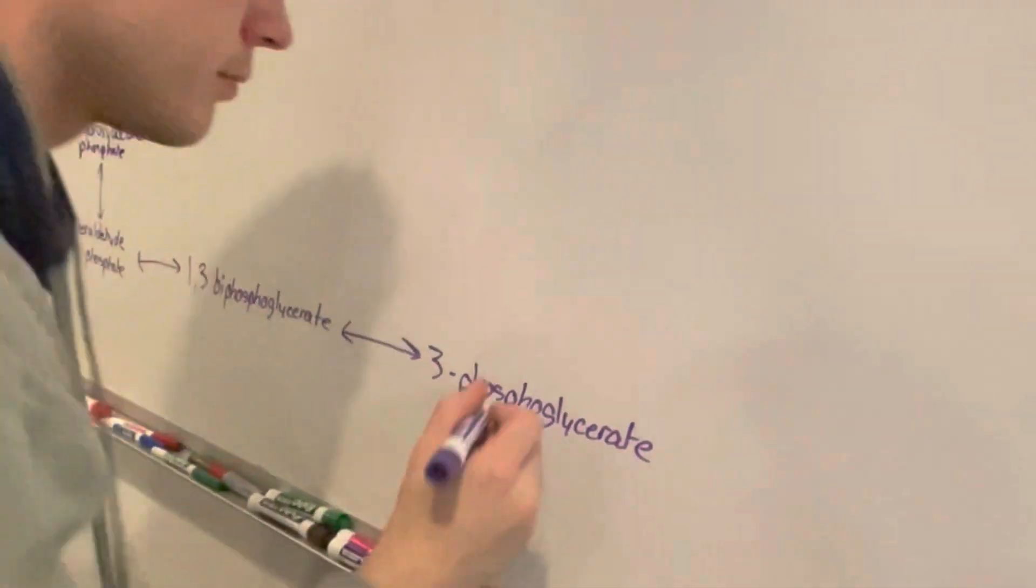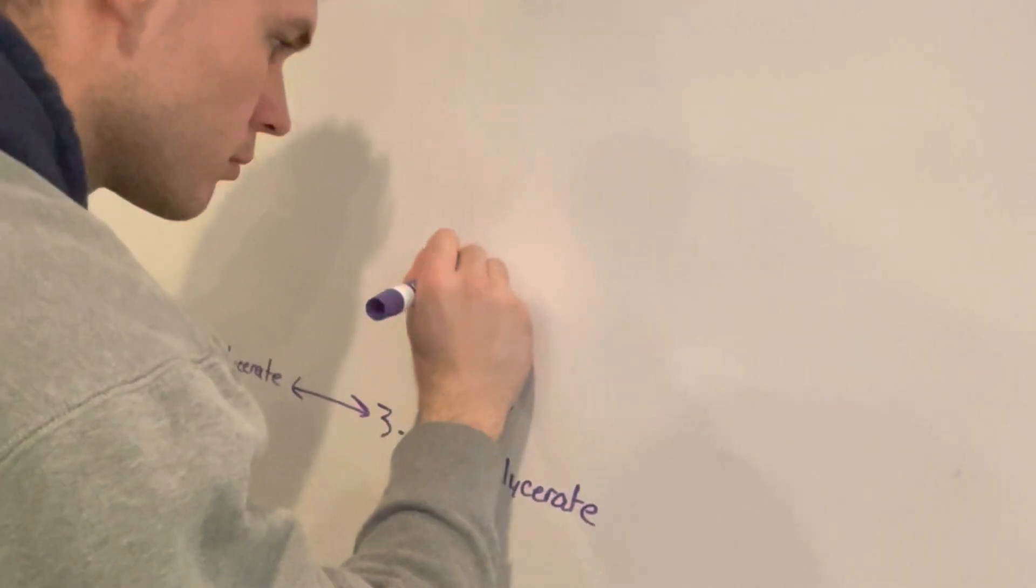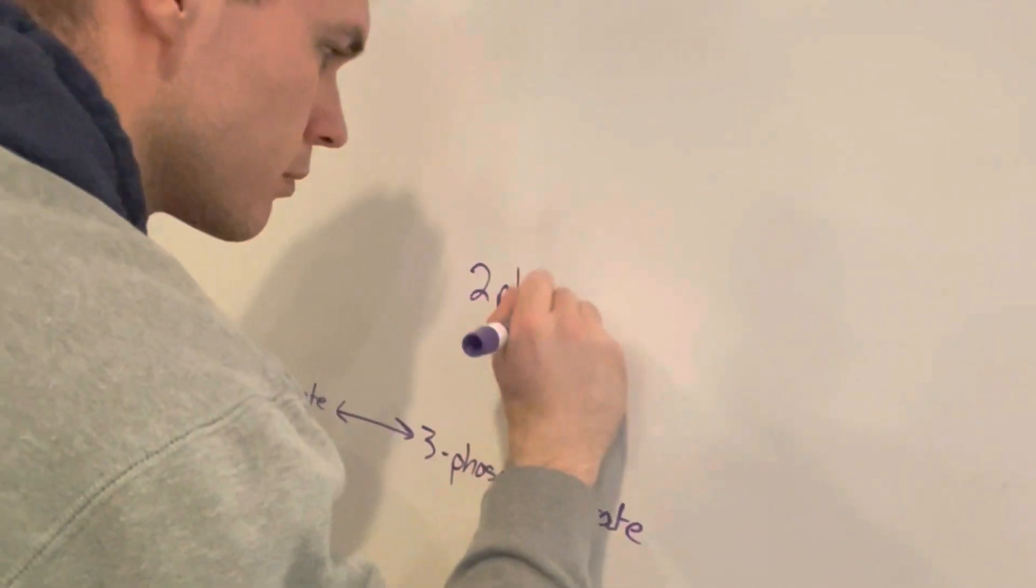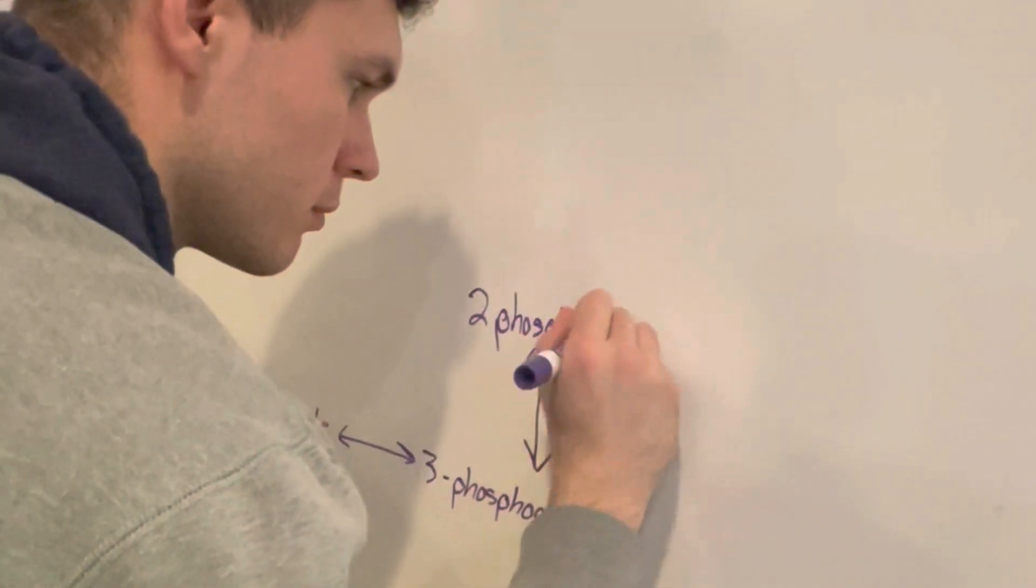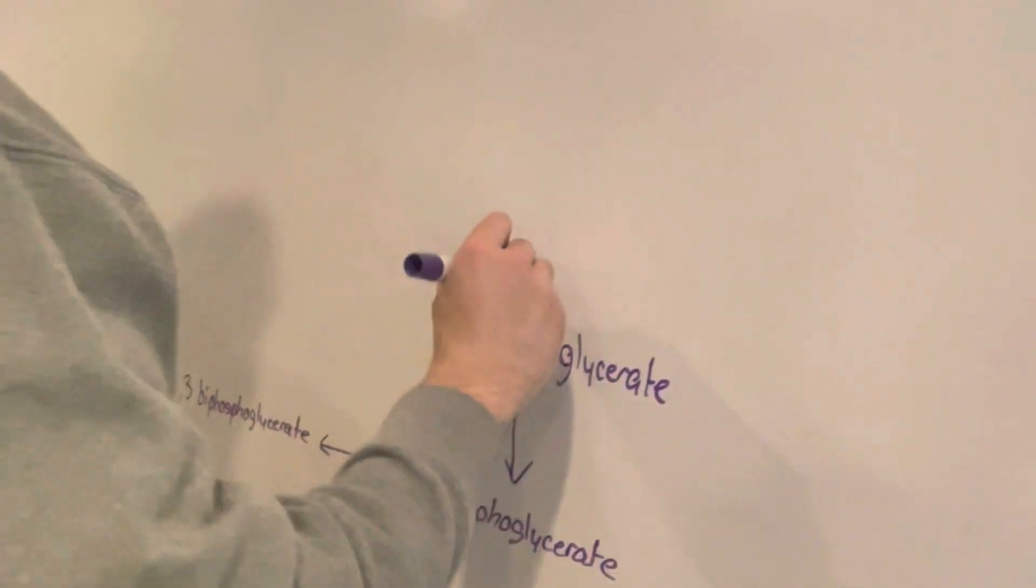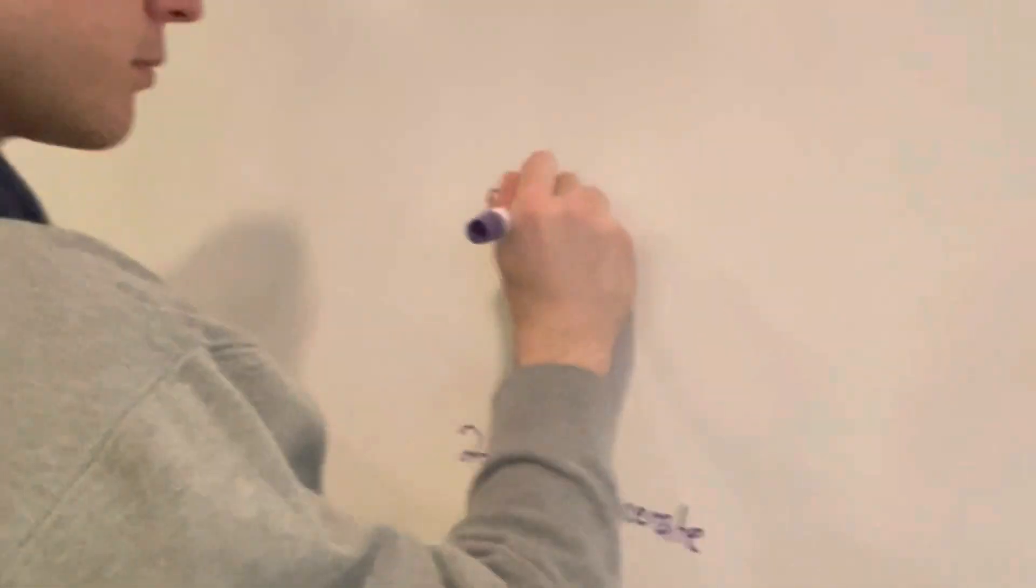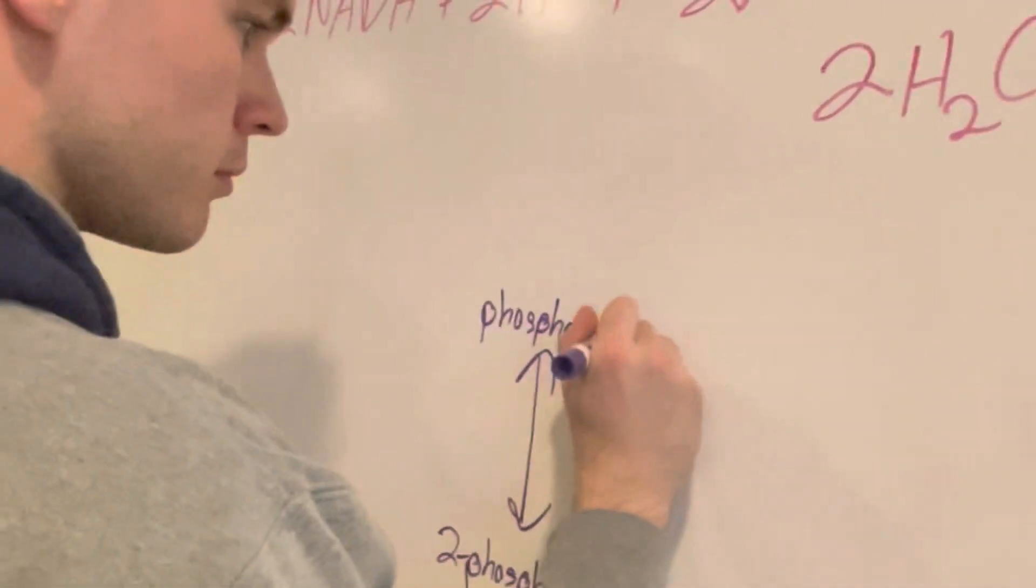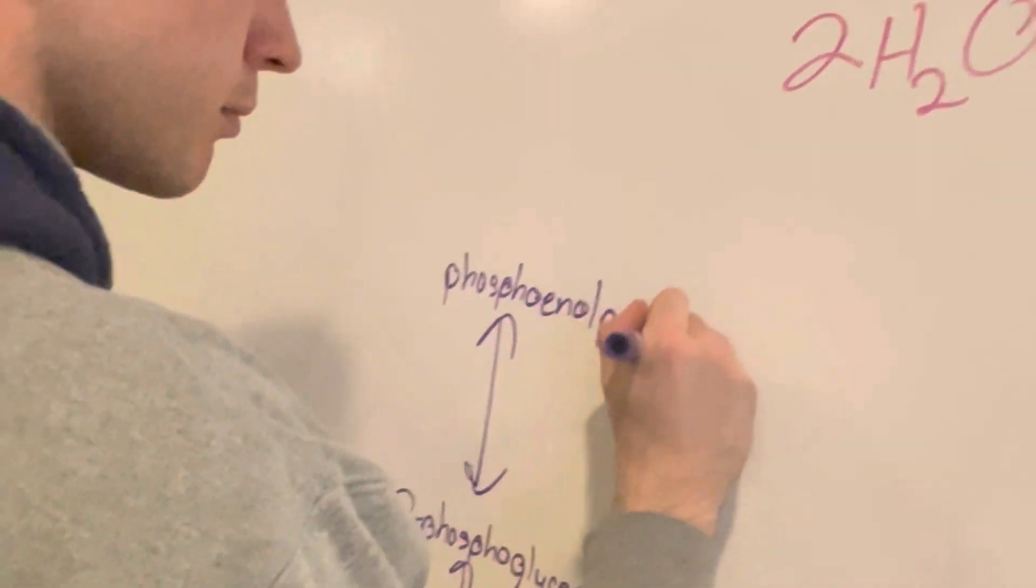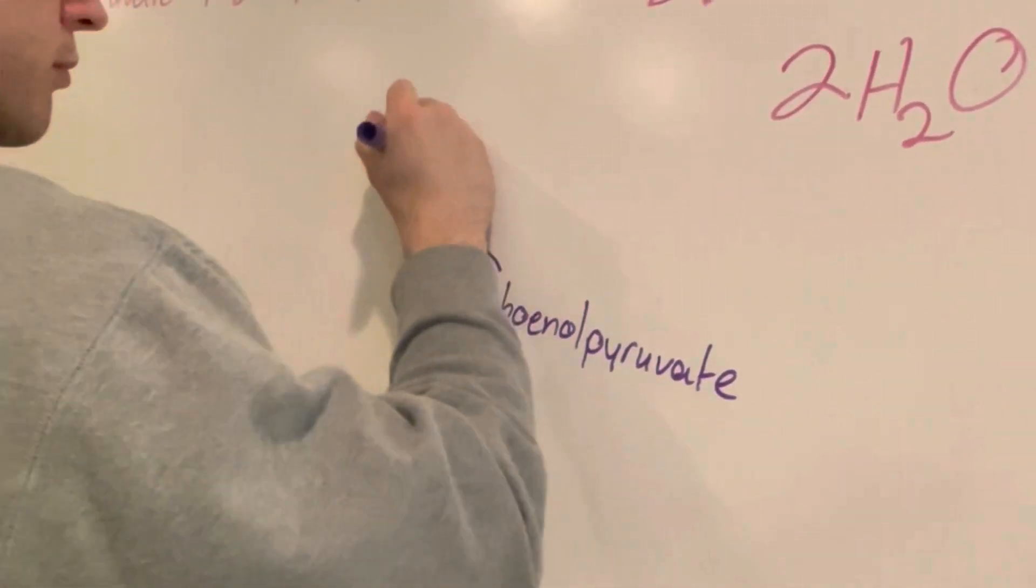Another reversible reaction then turns it into 2-phosphoglycerate. This non-reversible reaction then turns it into phosphoenolpyruvate. Glycolysis is then ended by the last reaction turning that phosphoenolpyruvate into pyruvate.